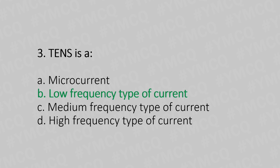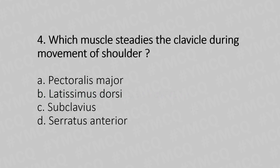Fourth question: Which muscle steadies the clavicle during the movement of the shoulder? Option A: pectoralis major. Option B: latissimus dorsi. Option C: subclavius. Option D: serratus anterior. The answer is Option C, subclavius.